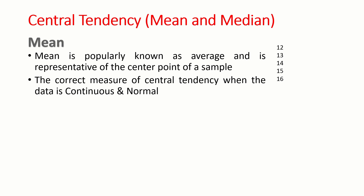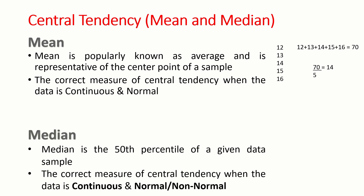Suppose you have to calculate the mean of the following numbers: 12, 13, 14, 15, and 16. The first step is to add these numbers. The sum of this is 70, divided by the count of these numbers which is 5, and the mean of this data set is 14.